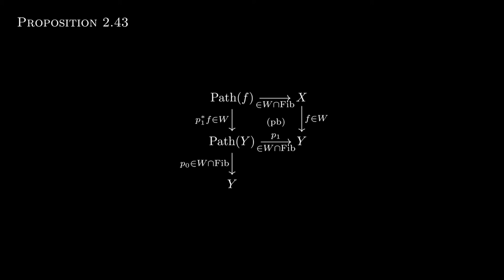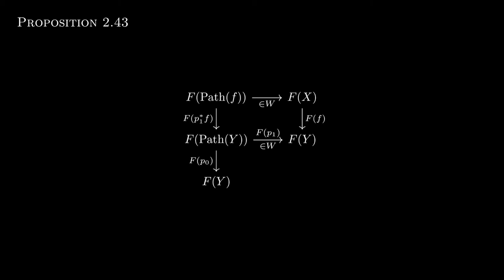We can apply F to this diagram. All the acyclic fibrations are sent to weak equivalences. The factorization lemma then says that the vertical composite is a fibration, and since both are weak equivalences it is an acyclic fibration. Then we just apply two-out-of-three a couple of times to see that F of f is indeed a weak equivalence.